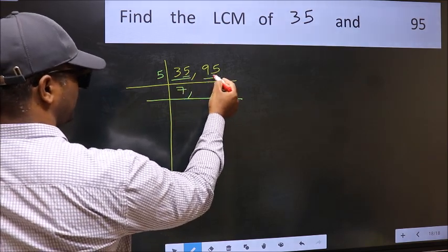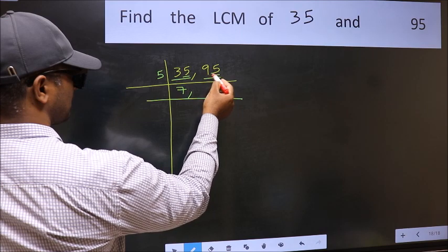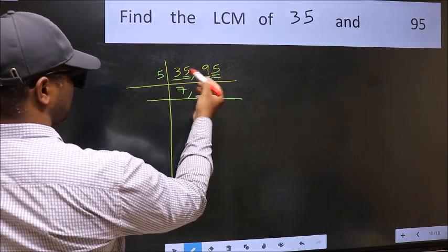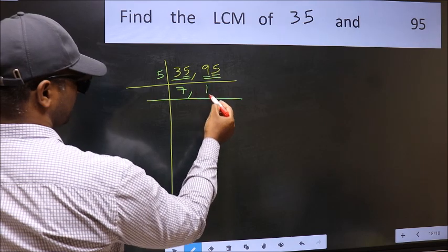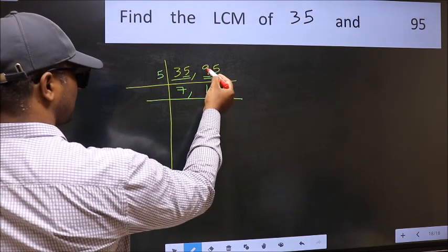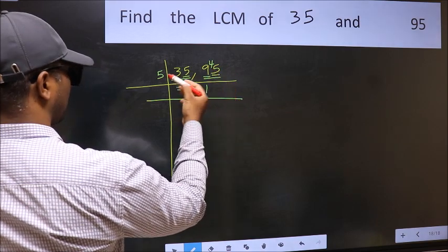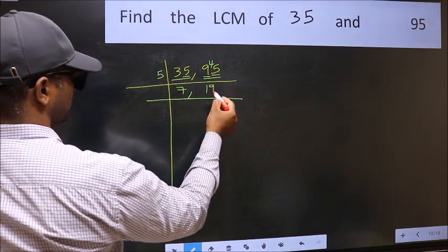The other number, 95, last digit 5, so this is divisible by 5. First number, 9. A number close to 9 in the 5 table is 5 times 1 is 5. 9 minus 5 is 4, 4 carried forward, 45. When do we get 45 in the 5 table? 5 times 9 is 45.